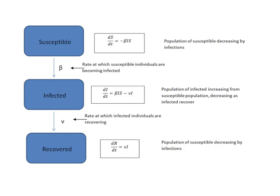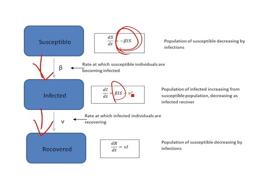In this basic model, the only way for a person to move from compartment to compartment is for a susceptible person to become infected, or an infected person to become recovered. Therefore, we set up the differential equations as follows. The movement out of the susceptible group will be by new infections, which will then increase the number of infections, and the infected group will be decreased by the current infections recovering, which will then increase the portion of recovered.